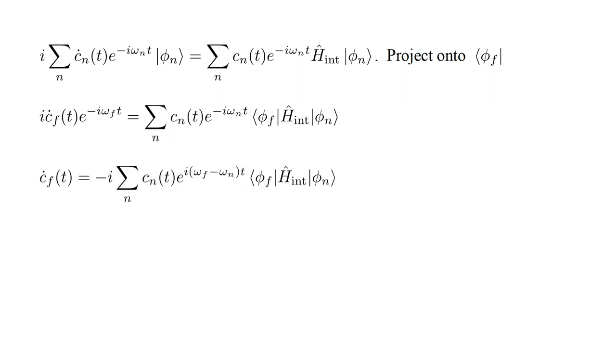Solving for c-dot-f of t, this is equal to minus i sum over n c-n of t e to the i omega-f minus omega-n t times the f-n matrix element. This gives us a differential equation that determines how the c-f of t coefficient of our solution evolves with time.